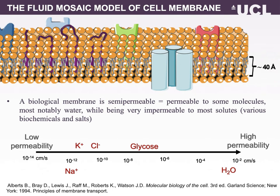Our biological membrane has low permeability to sodium ions at around 10 to the minus 12 cm per second. Membrane permeability is not a constant; it is instead affected by environmental factors. Solutes tend to move from a higher concentration to a lower concentration, and this is defined in Fick's first law.